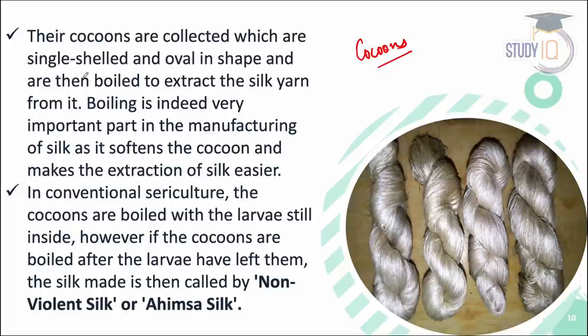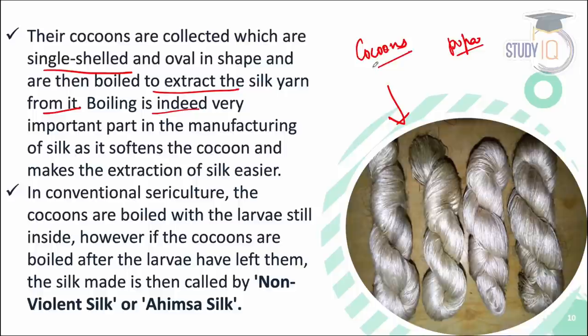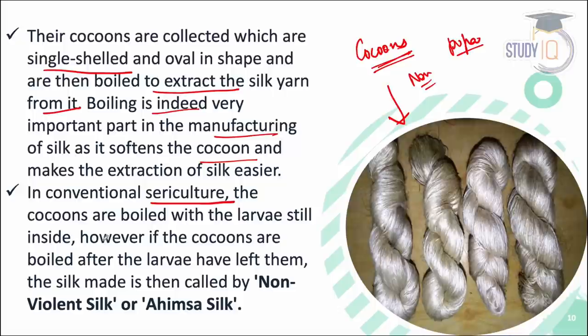The cocoons are collected — in a single shell you will find the silk. They are then boiled to extract the silk. Usually, when the silkworm is in the pupa stage, the cocoons are boiled. Boiling is important because the cocoon is hard and needs softening to make extraction easier.